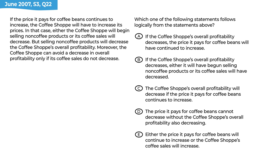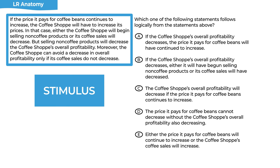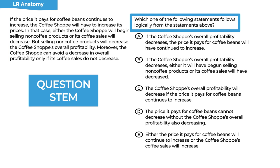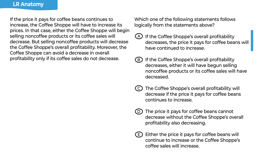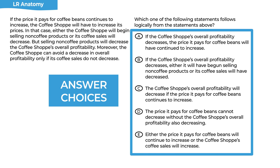Here's an actual question from the logical reasoning section. We want to identify the different parts of the question so that we have the same vocabulary. That initial paragraph is called the stimulus — it's the place where we get the information on which we're going to act, whether it's a set of statements or an argument. Then we have the question stem, which is where we get our task — the thing we need to accomplish to get to the correct answer. The question stem is very important because it helps us organize our work.